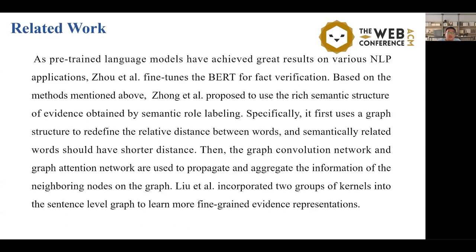The approaches using pre-trained language models have achieved great results on various NLI benchmarks. Based on the methods mentioned above, some work proposes the use of the rich semantic structure of the evidence obtained by semantic role labeling. Specifically, it will first use the graph structure to redefine the relative distance between words, and the semantically related words should have a shorter distance. Then, the graph convolutional network and the graph attention network are used to propagate and aggregate the information of the neighboring nodes on the graph. In detail, they incorporate two groups of kernels into the sentence-level graph to enhance the evidence representation.